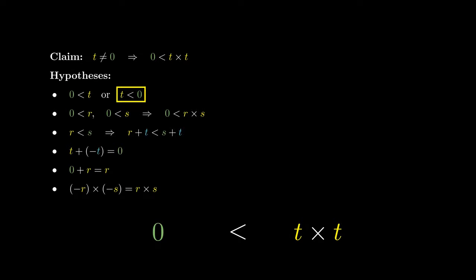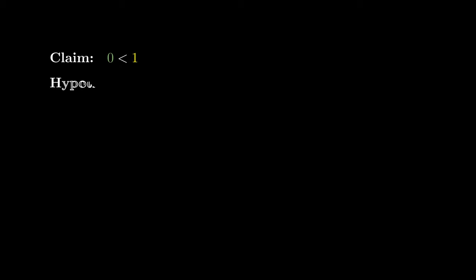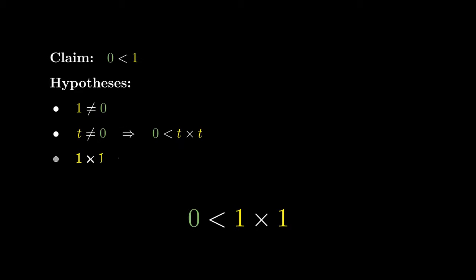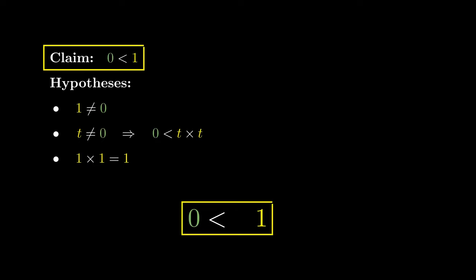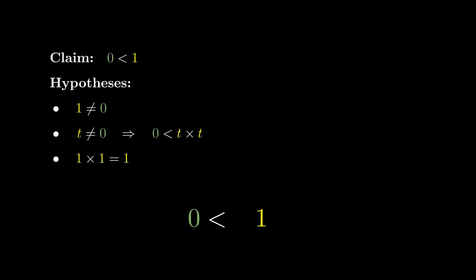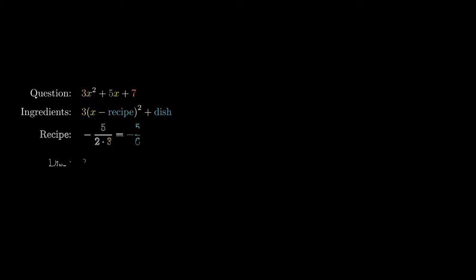These results help us prove that 1 is positive. According to the theory of rings, the multiplicative identity 1 is not the additive identity 0. From the previous result, any non-zero number when multiplied by itself is positive. Since 1 is the multiplicative identity, 1 times 1 remains as 1, which proves that the number 1 is positive. These results establish the rules of high school algebra and are applied in completing the square in the linked video.